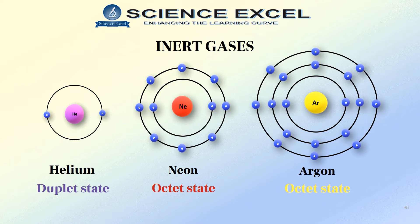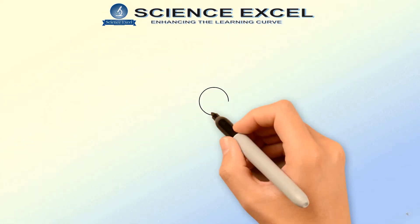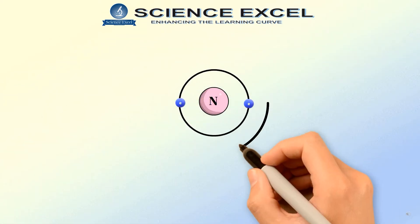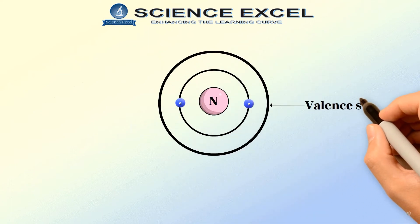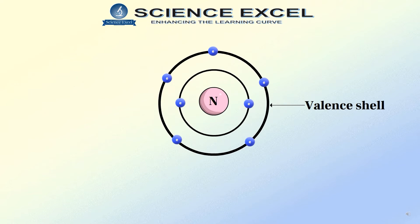Now, let us understand what a valence shell is. The outermost shell of an atom is called its valence shell. And the electrons present in the valence shell are called the valence electrons. The chemical properties of elements are decided by these valence electrons since they are the ones that take part in chemical reactions.